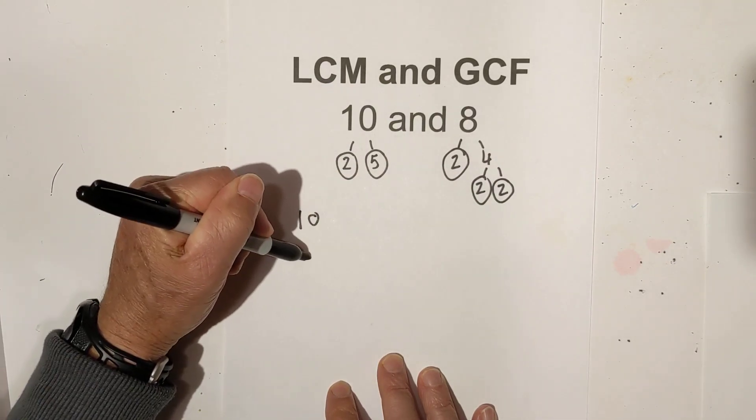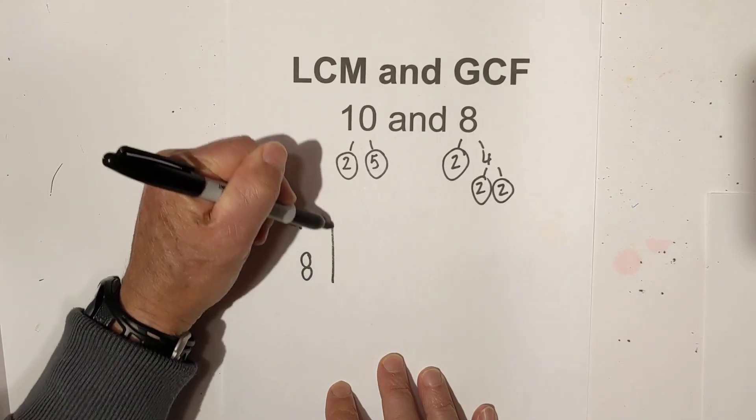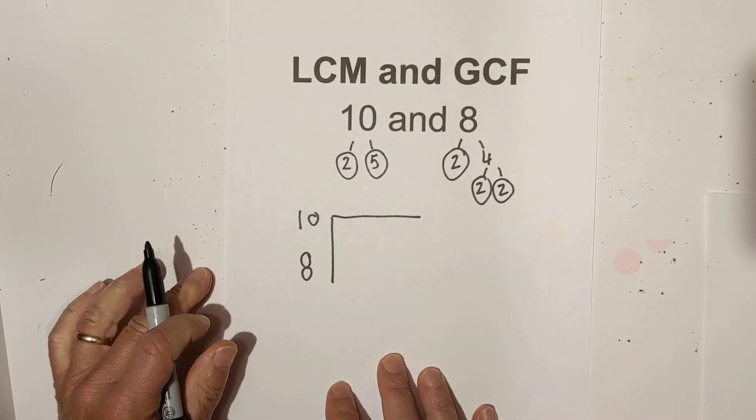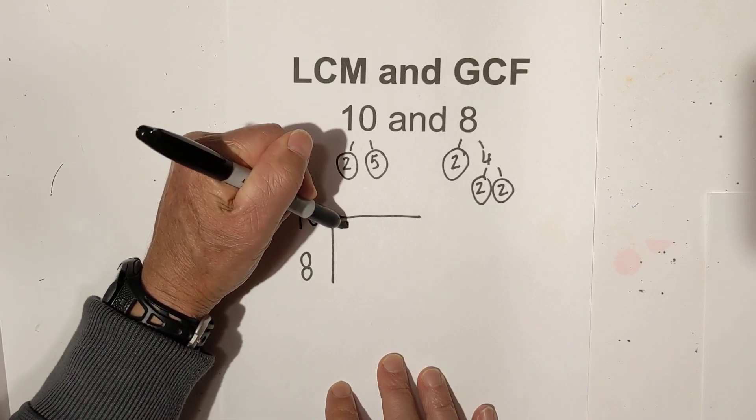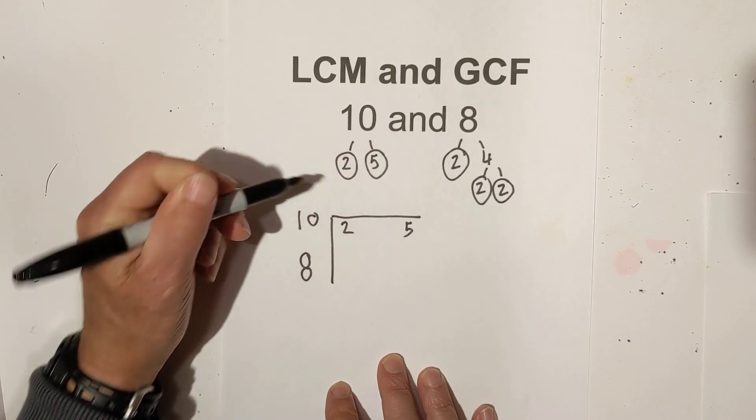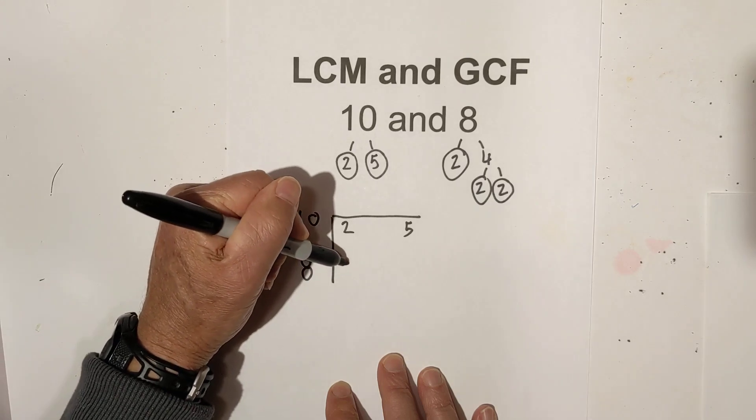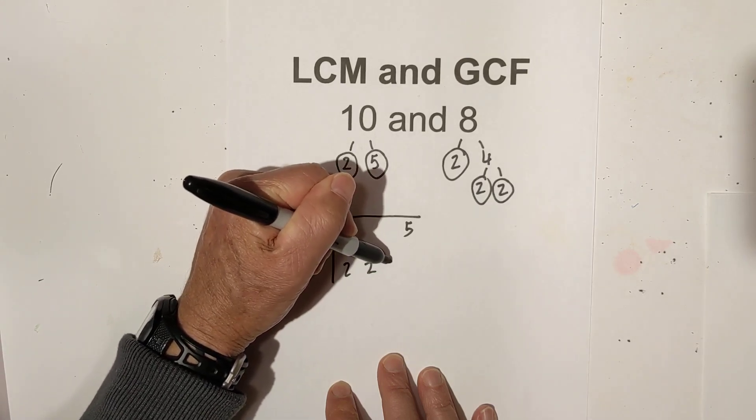Next, I create a chart, and this just helps keep everything organized. I'm going to transfer all the prime numbers into the chart. For the 10, I have a 2 and a 5. And now for the 8, I have a 2, a 2, and a 2.